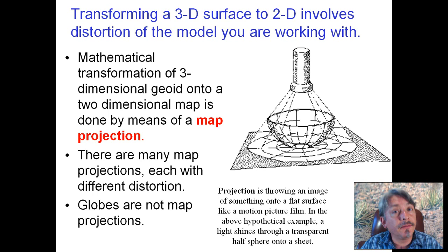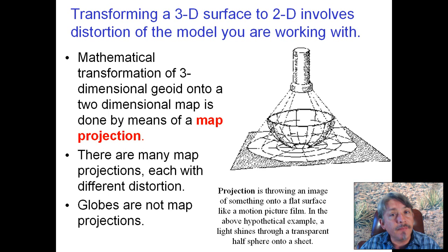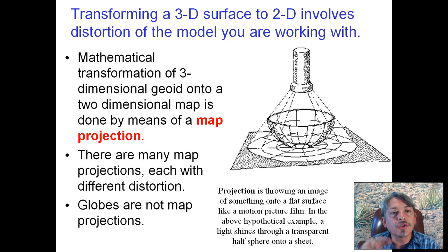When you watch a movie made on film, it is projected upon a wall using a special device of lights and lenses. Think of projection as the ability to throw an image of something onto a flat surface. In the hypothetical example, a flashlight shines through a transparent globe — a spherical world with latitude and longitude depicted on it — onto a flat surface. That is basically what we do in map projection: it's a mathematical transformation of a three-dimensional geoid onto a two-dimensional surface.